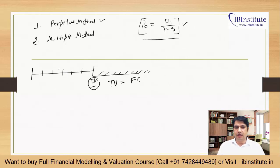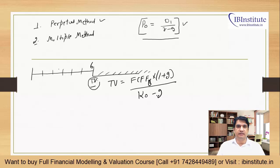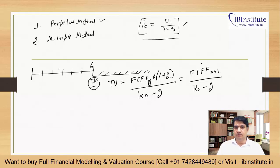Terminal value = Free Cash Flow to the Firm (FCFF) for year N, multiplied by (1 + growth rate), divided by (cost of capital minus G). If you observe, this becomes FCFF for year N+1 divided by (cost of capital minus G) — that is, the 7th year cash flow after the 6th year forecast period, divided by (WACC minus G). This formula gives us the terminal value.